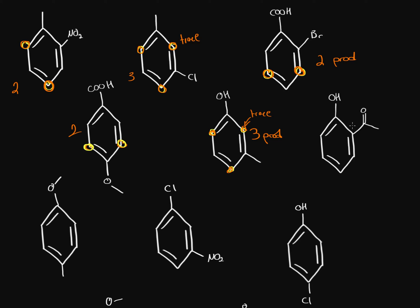On the next molecule, we have a hydroxyl group which is electron-donating, and a ketone which is electron-withdrawing. For the hydroxyl group, the ortho and para positions are these and these. For the ketone, the meta positions are these and these. So we'll have two products. These are straightforward because the ortho/para-directing substituents and the meta-directing substituents are perfectly placed.